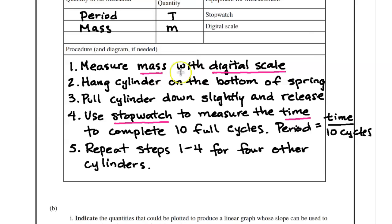So step one, I'm going to measure the mass with the digital scale. Step two, I'm going to hang the cylinder on the bottom of the spring. Step three, I'm going to pull the cylinder down slightly and release. Step four, I'm going to use a stopwatch to measure the time to complete 10 full cycles. Notice I am saying 10 full cycles, not just one. This decreases uncertainty because if you do it one full cycle, it's pretty fast. So this decreases that uncertainty. And I also state that a period is going to be the time that I measure with the stopwatch divided by 10 cycles because I'm measuring the time for 10 cycles. And then step five, I'm going to repeat steps one through four for four other cylinders. And this is really important that you state this whenever you have these type of problems. You're probably going to want to say that you're going to do multiple trials to decrease uncertainty.